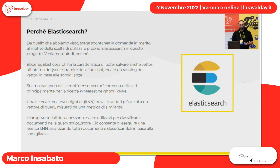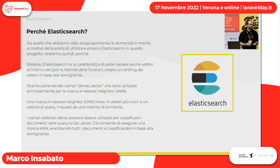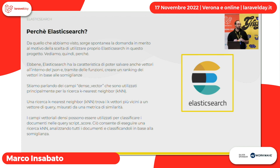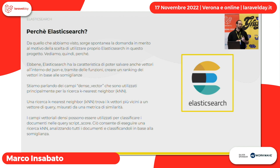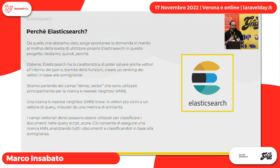Elasticsearch ha la caratteristica di poter salvare anche i vettori all'interno di JSON. Quindi BERT, data una frase, restituisce un vettore di 768 numeri, e in Elasticsearch abbiamo la possibilità di salvarlo e di fare un tipo di ricerca per similarità. In questo modo possiamo andare a recuperare i documenti che hanno un argomento molto più simile a quello che l'utente ha effettivamente cercato.